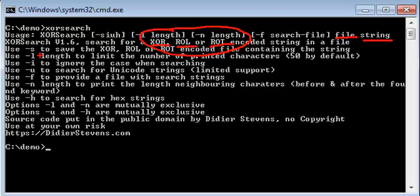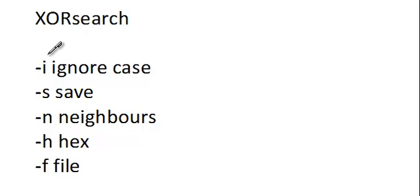XORSearch has different options. We won't discuss all of them, just the more interesting ones. First, you have option -i to ignore case, so the string you provide can be in any case — uppercase, lowercase, or a mix. XORSearch will find it if it is present encoded in the file regardless of the encoding.